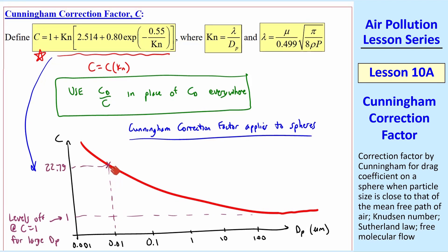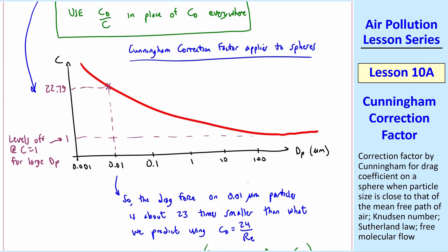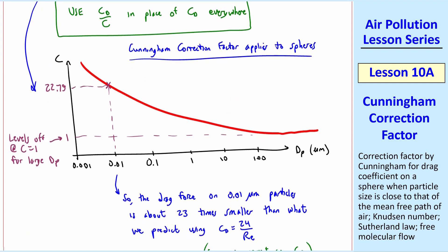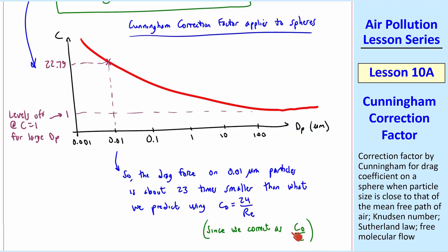C decays as dp increases, and it levels off at C equal 1 for large dp. For example, at 0.01 microns, C turns out to be about 22.79, which is significant. The drag force on these 0.01 micron particles is about 23 times smaller than what we predict using Cd equal 24 over Reynolds number, since we correct Cd as Cd over C instead, and this factor appears in the denominator.